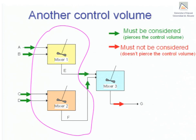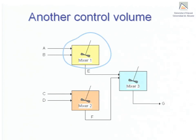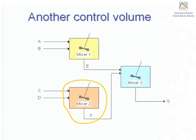Stream G will be left out when analyzing the process based on this control volume. Of course, the following control volumes may also be set up. One which contains mixers 2 and 3. One which contains only mixer 1. One which contains only mixer 2. And finally, one which contains only mixer 3.